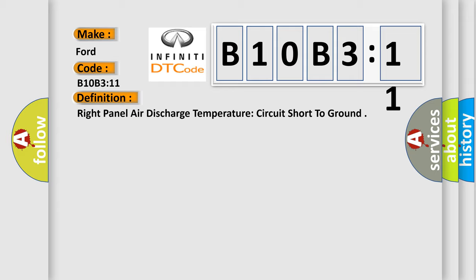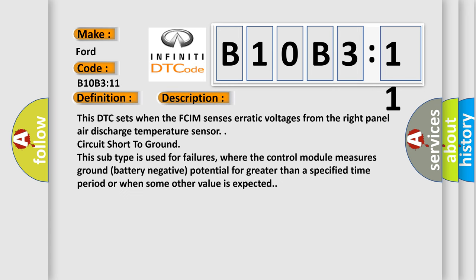The basic definition is right panel air discharge temperature circuit short to ground. This DTC sets when the FCIM senses erratic voltages from the right panel air discharge temperature sensor circuit short to ground. This subtype is used for failures where the control module measures ground battery negative potential for greater than a specified time period or when some other value is expected.